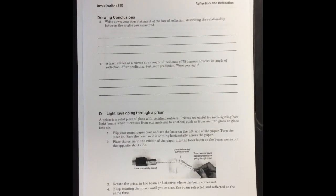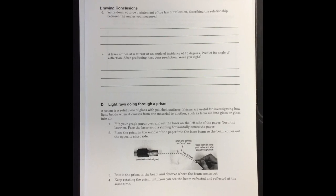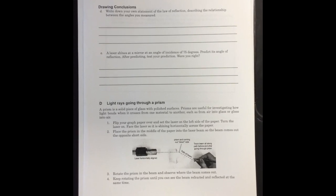Once you've completed part C, we're going to move on to part D. This part is taking a look at light rays going through a prism.